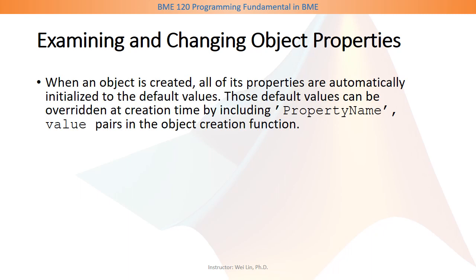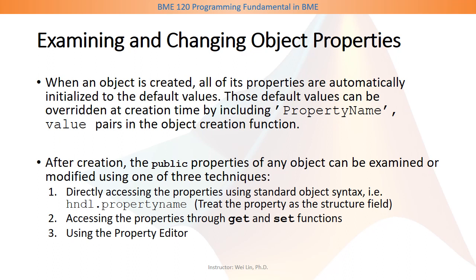When a graphics object is created, all of its properties are automatically initialized to default values. The default values can be overridden at creation time by including property name and value pairs in the object creation function. Alternatively, you can modify the values of a property through the following three methods. First, you can directly access the property using standard object syntax — that is, handle.propertyname — treating the property as a field of a structure. Second, you can access the properties through the standard get and set functions. Lastly, you can use the property editor, which is available in the GUI development environment.